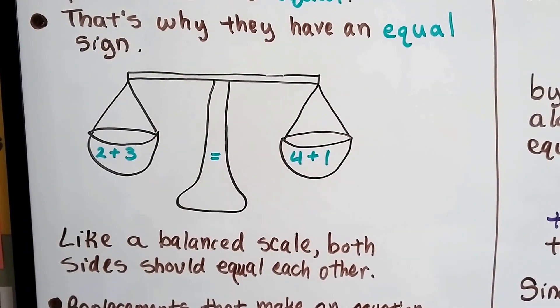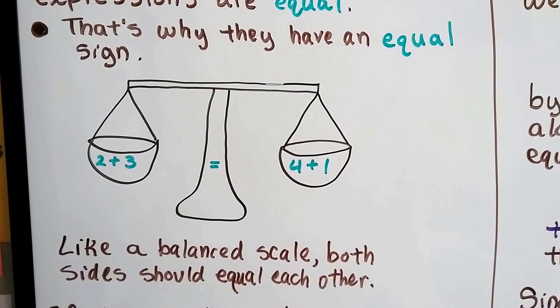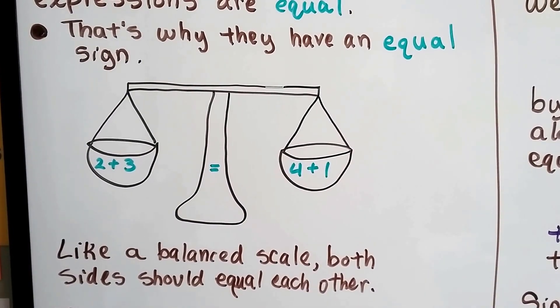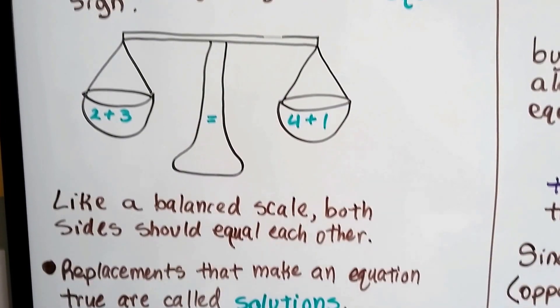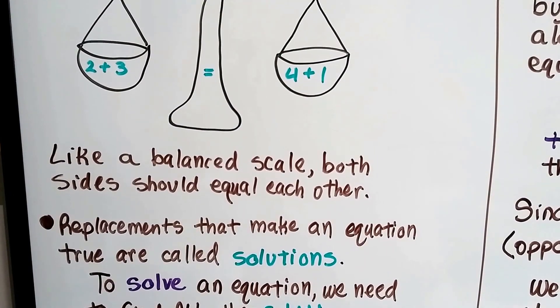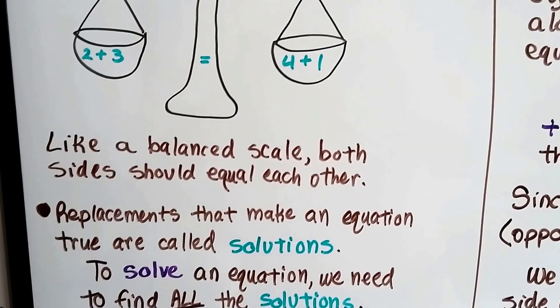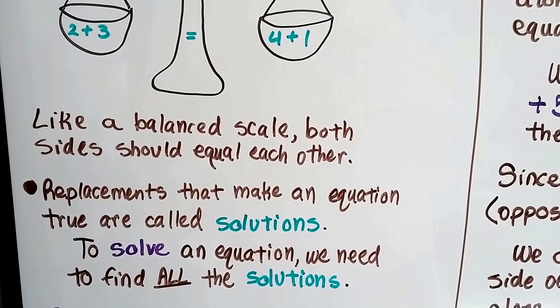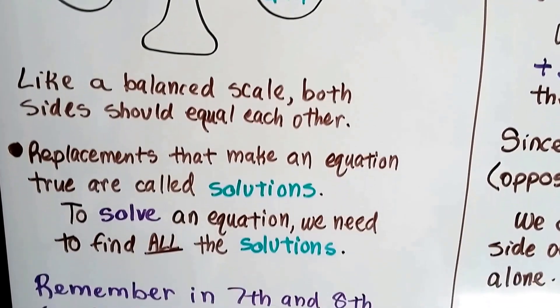Like a balanced scale, both sides should equal each other. 2 plus 3 on the left is equal to 4 plus 1 on the right. Replacements that make an equation true are called solutions. And to solve an equation, we need to find all the solutions.